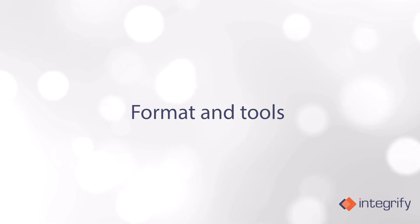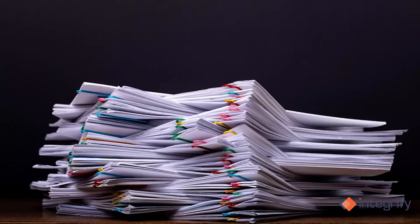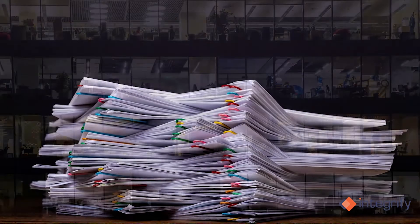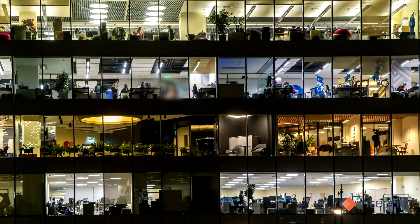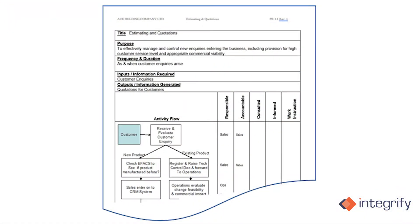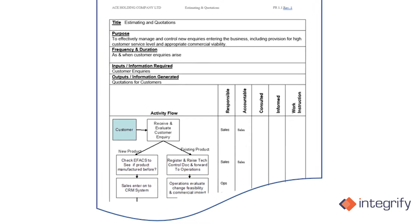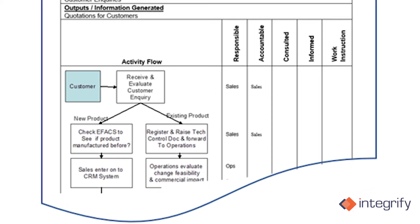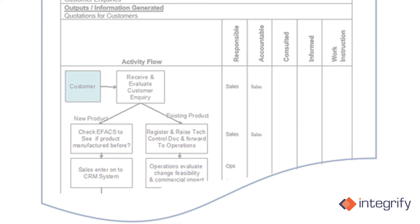Format and tools — Format: it is difficult to provide a single format for every organization. It will vary based on industry, the type of product or service offered, the size of the organization, and the complexity of the process. This figure shows an example of a procedure document showing format and content, including a column for who is responsible and accountable, as well as a purpose section.